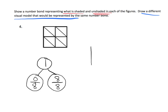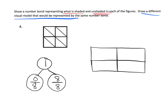I'll do something that looks like a tape diagram — there's my eight sections. We're going to shade in zero eighths, and then we're going to leave unshaded eight eighths. There we go — there's my different visual model.